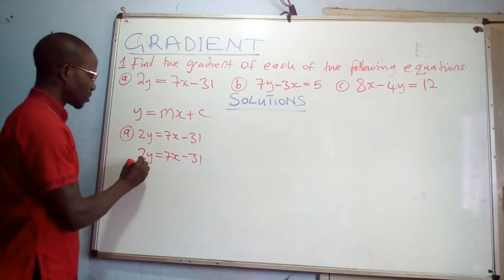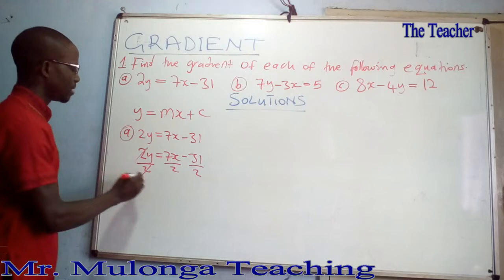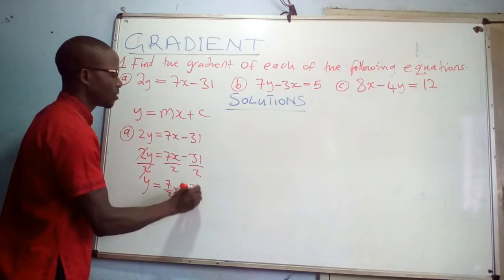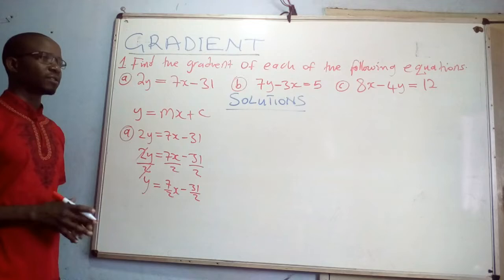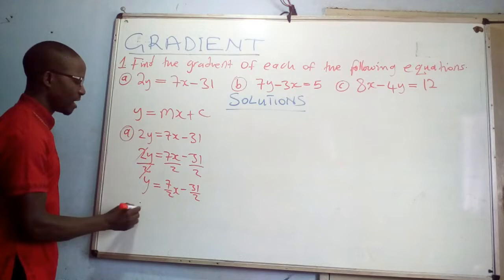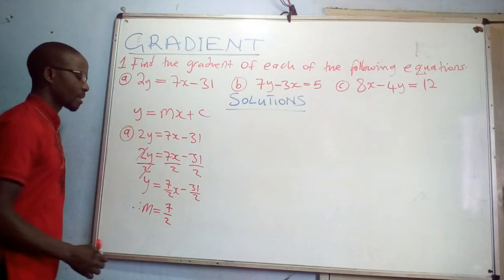Dividing throughout by 2 gives y = (7/2)x - 31/2. Our area of interest is to find the gradient. When y is the subject of the formula, the coefficient of x becomes the gradient. So in this case, m = 7/2.